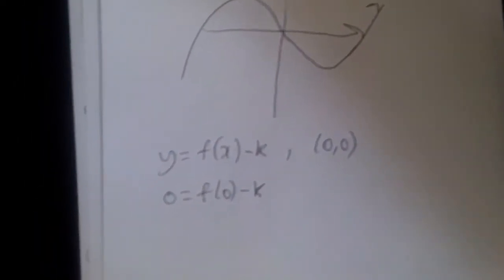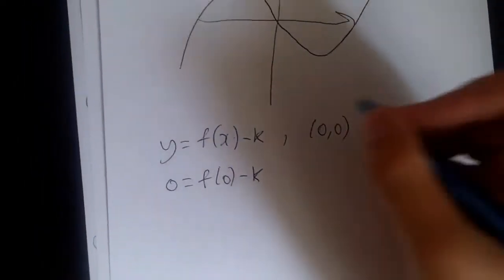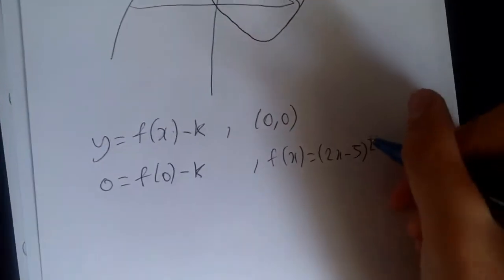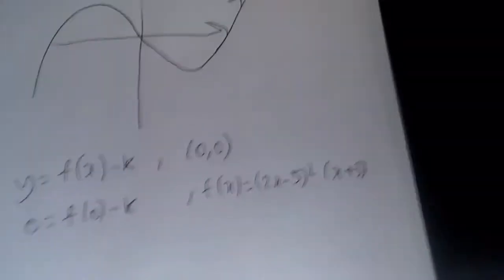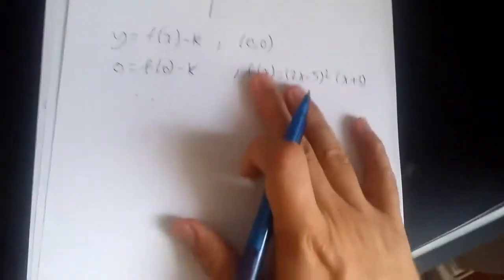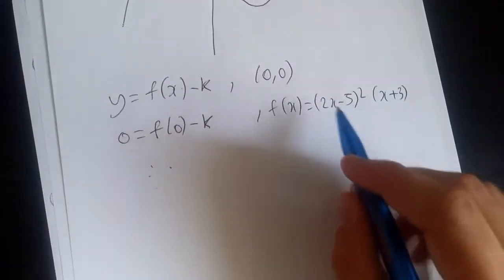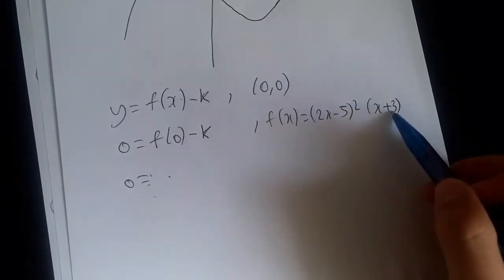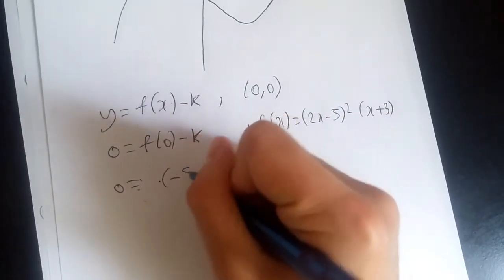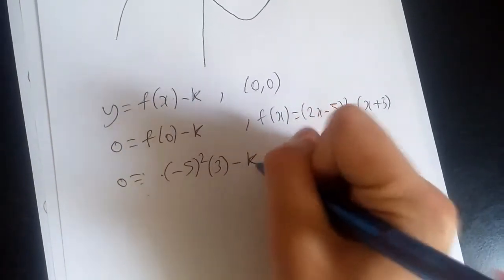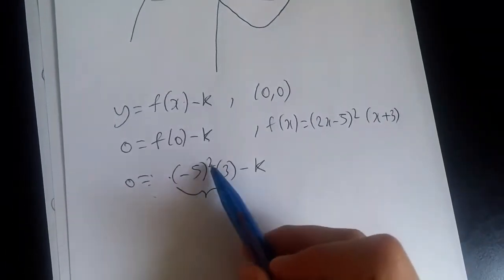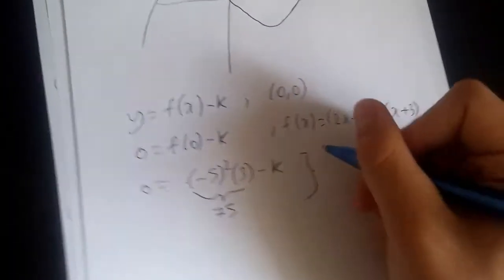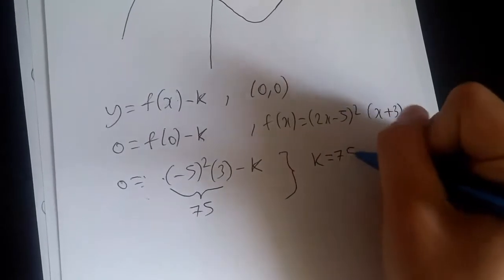And we know what the function f(x) is, don't we? It's given in the question. f(x) is just simply (2x-5)² times (x+3). So now at this stage, replacing x with 0, we're going to have 0 equals this, replacing x with 0, we're going to have (-5)² times 3 minus k. So this is going to give us (-5)² is plus 25, 25 times 3 is 75. And hence, 75 equals minus k, so of course, easily, this is k equals 75.